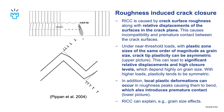Under near-threshold loading conditions, with plastic zone sizes of the same order of magnitude as grain size, crack tip plasticity can be asymmetric as shown in the upper picture. This can lead to significant relative displacements and high closure levels due to RICC, which depend highly on grain size. With higher loads, plasticity tends to be symmetric, so this more global mechanism isn't active. In addition, there is a more local mechanism in which local plastic deformations can occur in the roughness peaks and cause them to bend, also introducing premature contact and causing roughness induced crack closure. RICC can explain, for example, grain size effects.